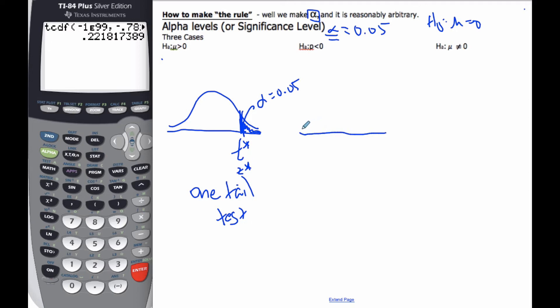Similarly, if I had a one-tail test but it was less than 0, here would be my test statistic, either t-star or z-star. And this area here again would be alpha, it would be 0.05. And this region here we call the critical region.